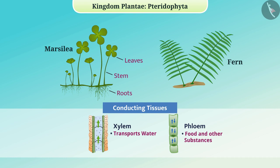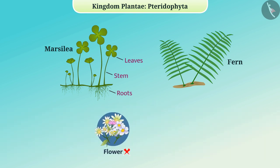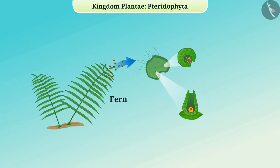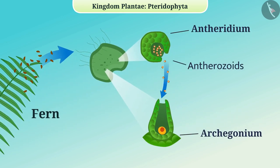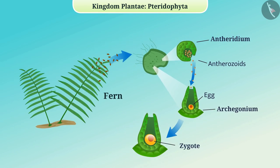Pteridophytes neither have flowers nor bear seeds. The gametophytes have male and female reproductive parts called antheridium and archegonium respectively. Antherozoids are released from the antheridium and reach the mouth of the archegonium through water. The egg present in the archegonium fuses with the male gamete to produce a zygote, which develops into a new individual.